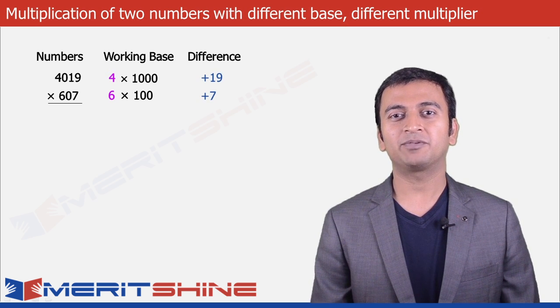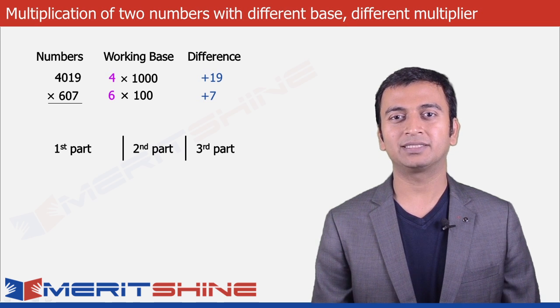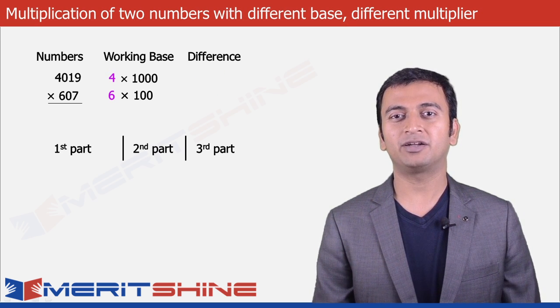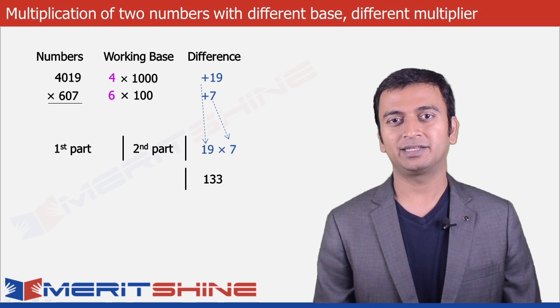We can now proceed to write down our answer which would be in three parts. Let us begin by Part 3, which would be the product of differences, which is 19 into 7, giving us 133.